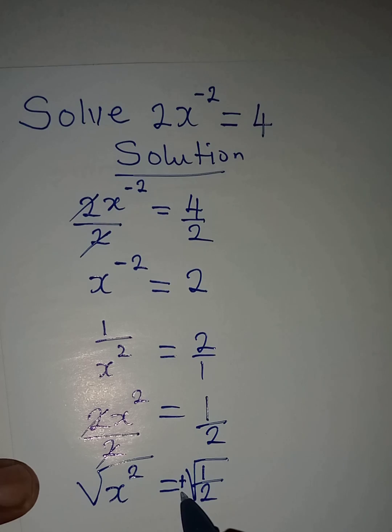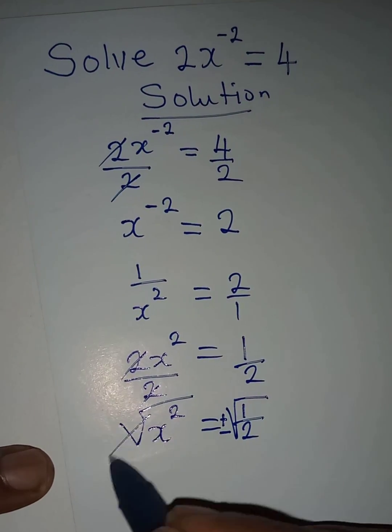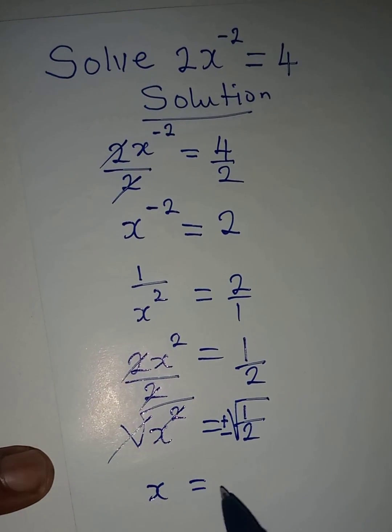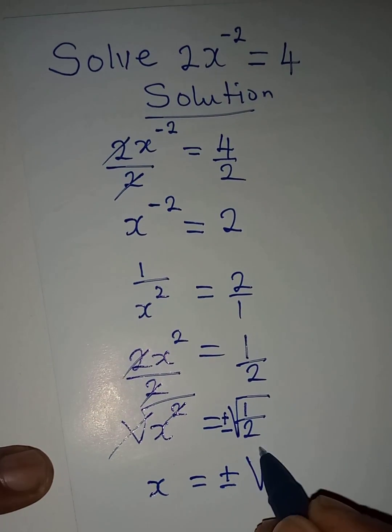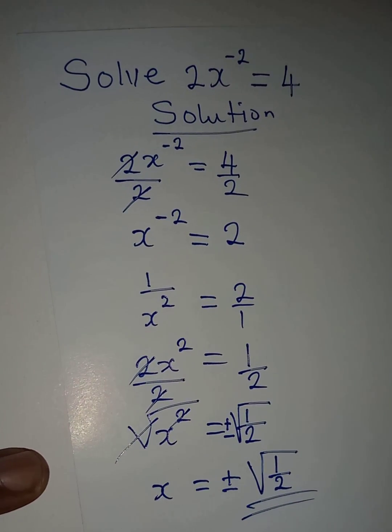So square root and the square will cancel each other, so x will be equal to positive or negative square root of 1 over 2. So this becomes the value of x. Thank you for watching.